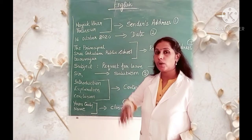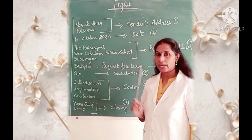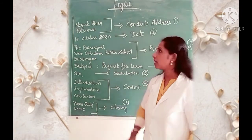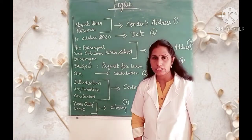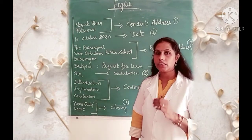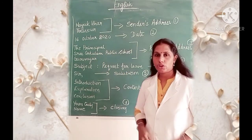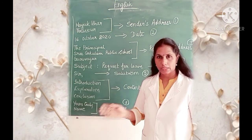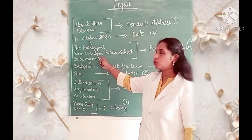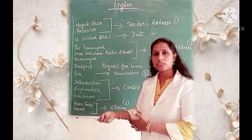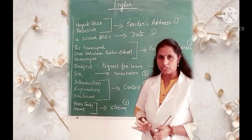Next, you have to leave a line and then write the date. Date is the second element. How do you write the date? The date is always written in the format: date, month, and year. You should not write 16/10/2020 — that is the wrong format. For official letters, the month has to come in full. So it is 16th October 2020. You can also write it as 16 October 2020. Either way is correct.